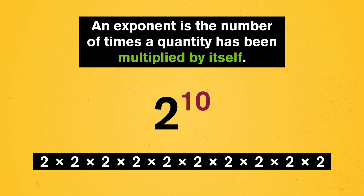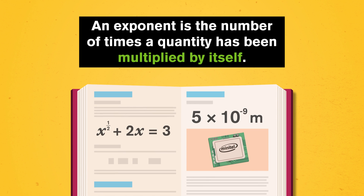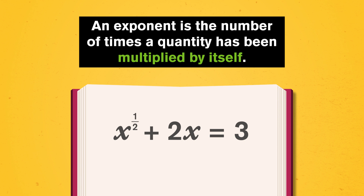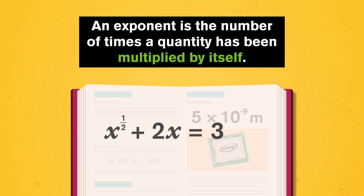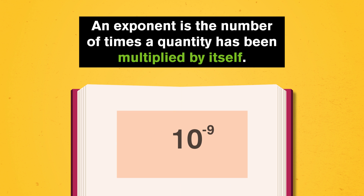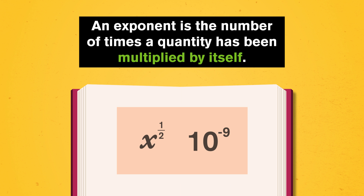So far, so good. But then you open your algebra textbook and you see something like x to the half plus two x equals three. Or you read about a new kind of computer chip that's as small as five times ten to the negative nine meters across. Now, I can't fold something negative nine times or multiply x by itself half the time. Like with fractions, any model we use to understand mathematical ideas gives us partial truths.